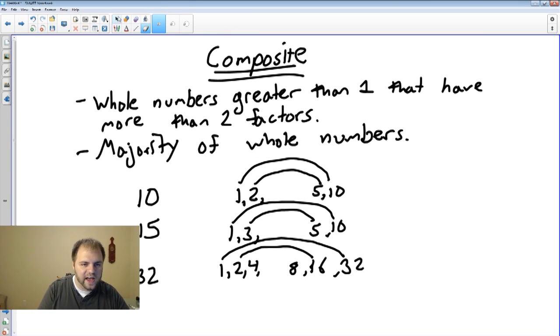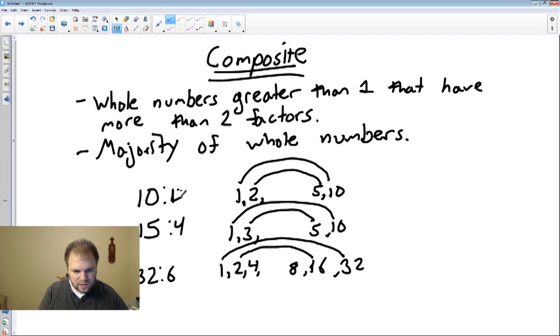So 32 has, looking at it, 1, 2, 3, 4, 5, 6 factors. 15 had 4 factors, 10 had 4 factors. It doesn't matter how many as long as it's more than 2 factors. That's the important part. More than 2 factors makes it composite.